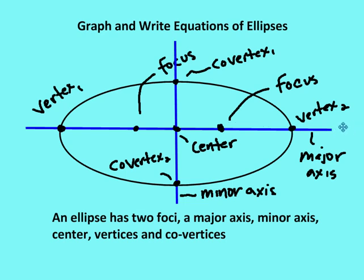Now, the major axis divides the ellipse into two equal halves, and runs along the elongated portion of the ellipse. I also have co-vertices, which are on what's called the minor axis, or the axis that runs through the middle of the narrower portion. And then I have the center, which is just halfway in between the two vertices and also the two co-vertices.